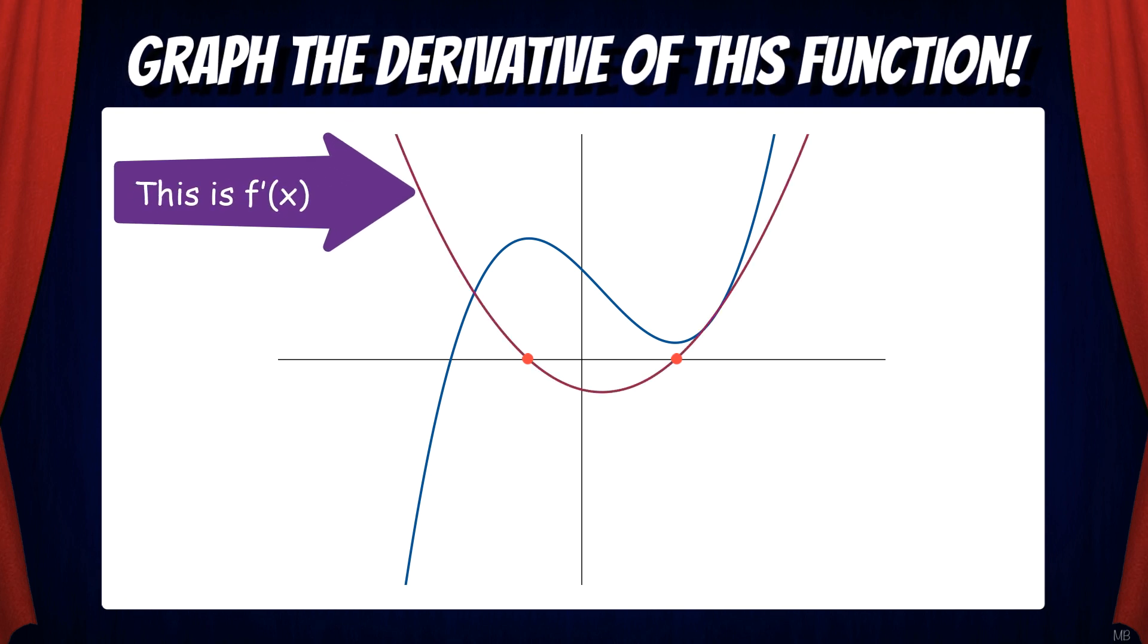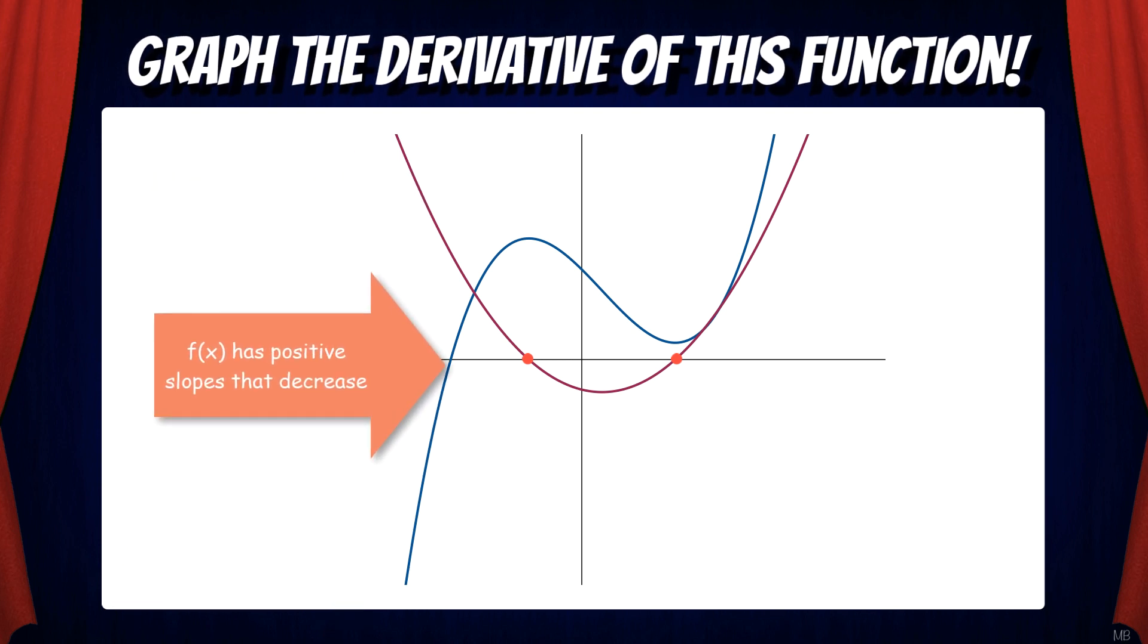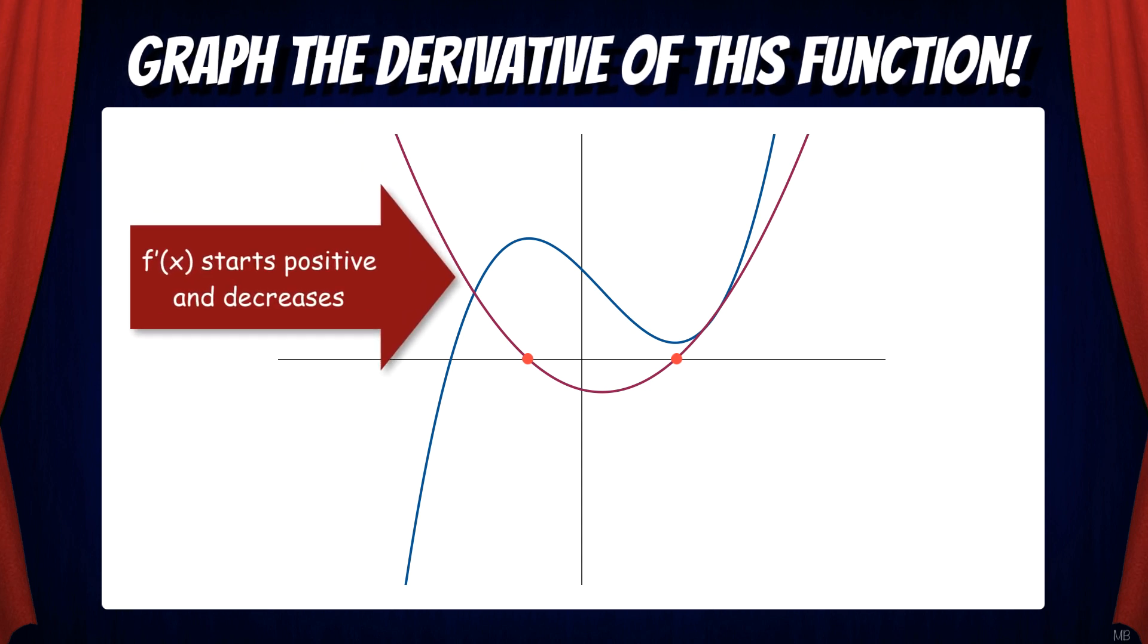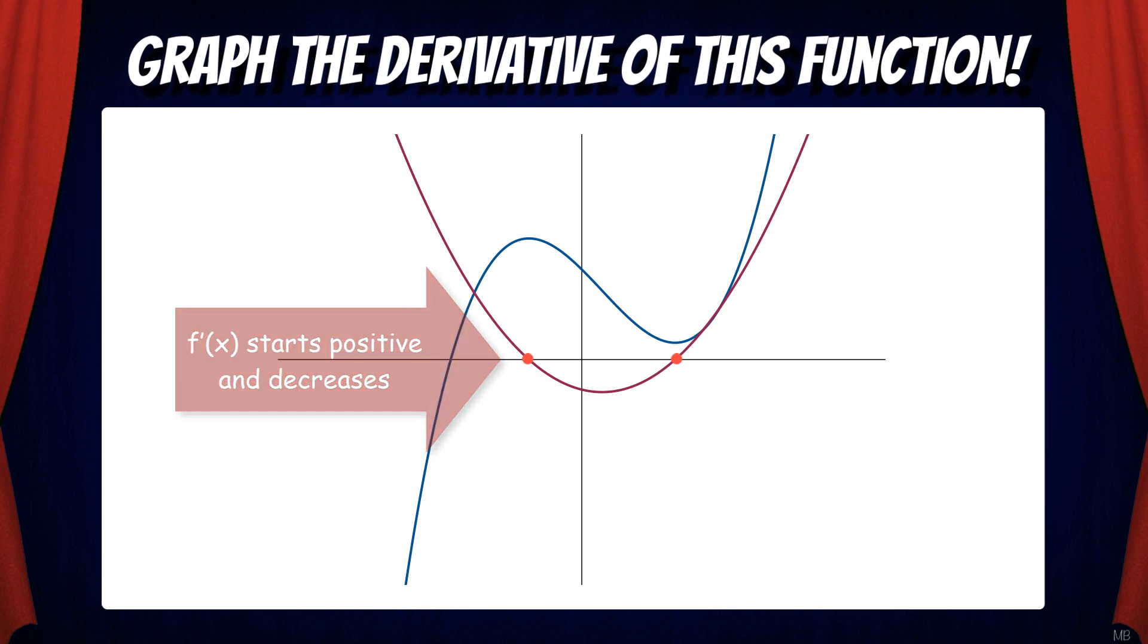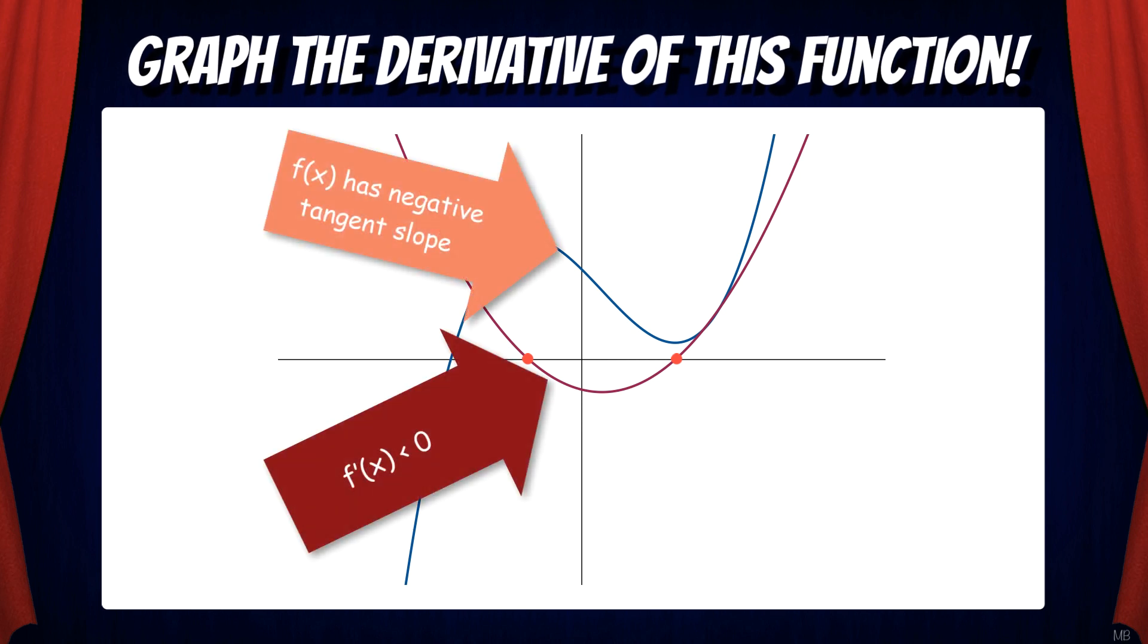Let's trace through this again to make sure you understand. The function starts with positive slopes that decrease. So as you can see, our derivative starts very positive and decreases towards zero.